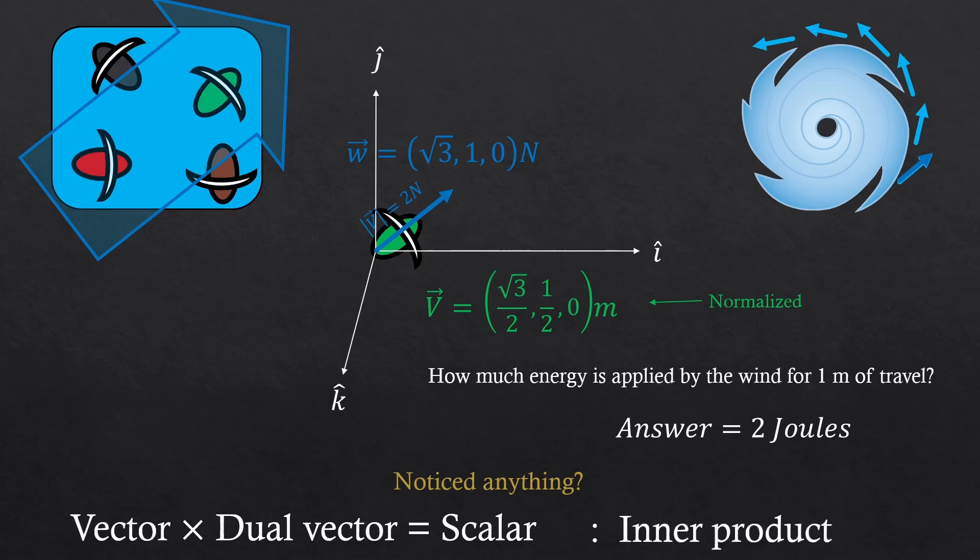I know it may not be clear to you yet, but just remember this for now. A vector contains information of an object. And a dual vector contains information of a background. Again, a vector contains information of an object, and a dual vector contains information of a background.